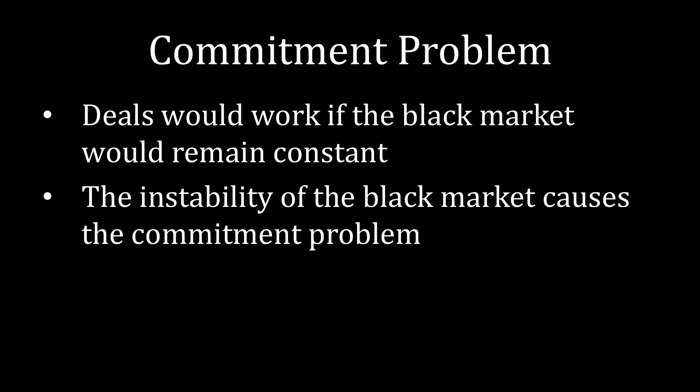With all of that explained, we can now circle back to the main point of this lecture. Deals would work if the black market remained constant — we wouldn't have a fluctuating cost to develop nuclear weapons. It's the instability of the black market that causes the commitment problem. Black markets are bad not necessarily because they exist; their existence only determines who gets what portion of the good. The inefficiency from a black market is caused because it might go away, and because it might go away, the potential proliferator feels it needs to build nuclear weapons while it still can at a cheap price.